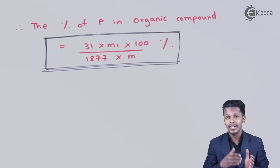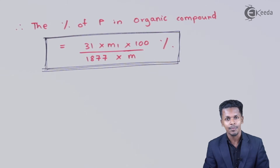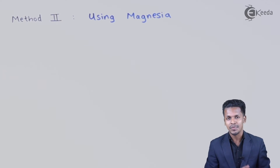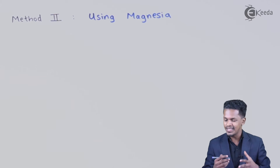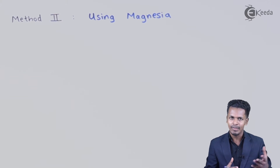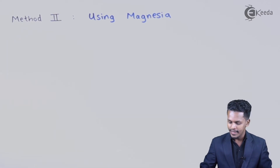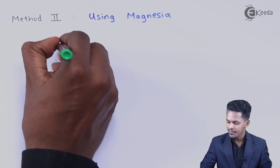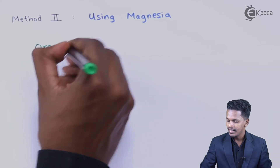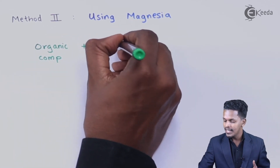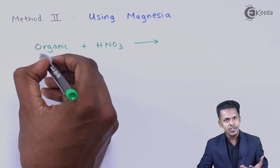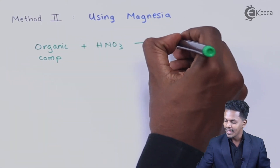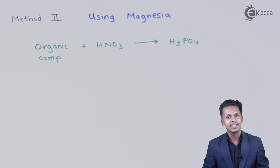Now let us discuss Method 2, which uses magnesia. The steps are very similar to Method 1. We take the organic compound of mass M grams and react it with fuming nitric acid, HNO3. If the compound consists of phosphorus, oxidation occurs and we obtain phosphoric acid, H3PO4.